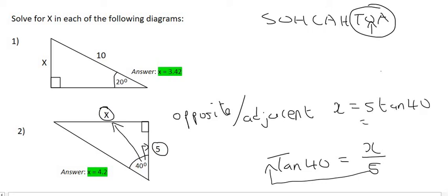And so you can type all that in on the calculator, and what that's going to give you is 4.2, if you round it up.